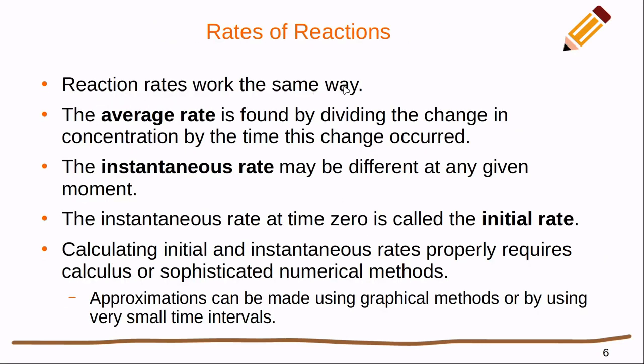And reaction rates work the same way. The average rate is found by dividing the change in the concentration by the time this change occurred, just like we did for our average rate of speed. The instantaneous rate may be different at any given moment. We have a special case here - the instantaneous rate at time zero is called the initial rate. So just like the initial rate of your car is always going to be zero because it's sitting there parked, the initial rate of a chemical reaction isn't necessarily going to be zero. It's going to start off actually producing and maybe have the highest rate that it's going to have during the entire course.